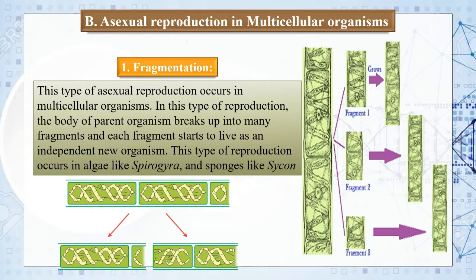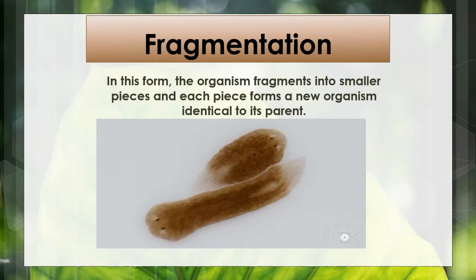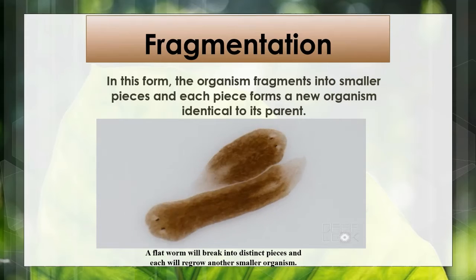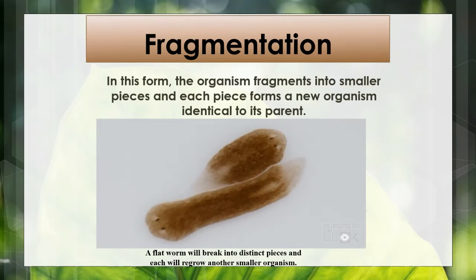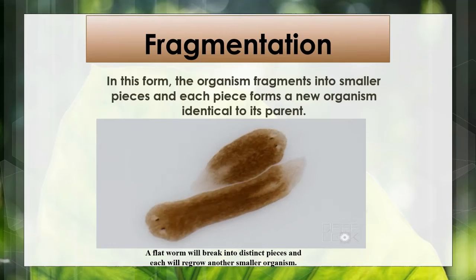So, spirogyra undergoes fragmentation. A few more examples: in this form, the organism fragments into smaller pieces and each piece forms a new organism identical to its parent. This is a flatworm which breaks into distinct pieces and each will regrow into another organism. So fragmentation happens not only in plants but even in animals like the flatworm, which fragments and produces new smaller organisms.